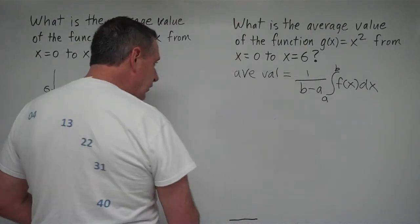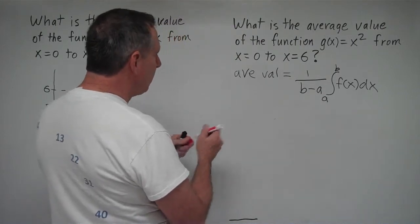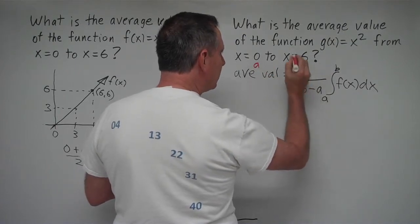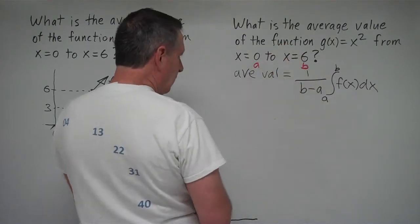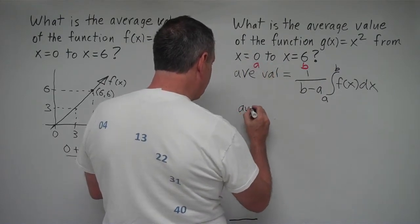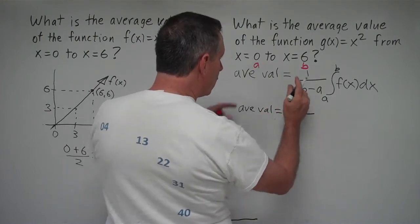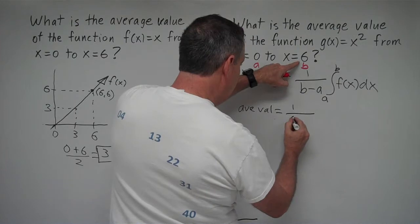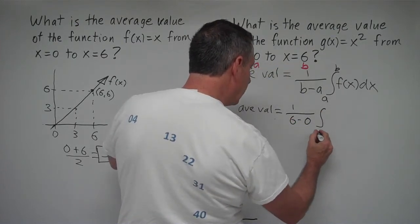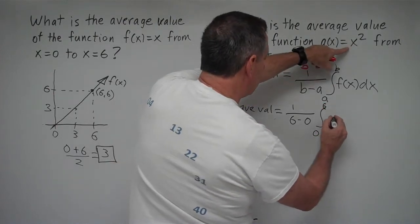So anyway, let's go ahead and apply. First of all, we're going to find, locate a and b. Well, a is going to be 0, input value 0, b is going to be 6. And so the average value in this situation, average value is going to be equal to 1 over b, which is 6, minus a, which is 0, times the integral from 0 to 6 of x squared dx.